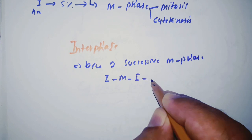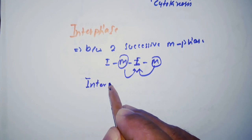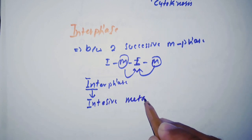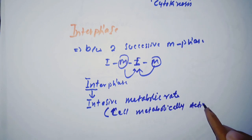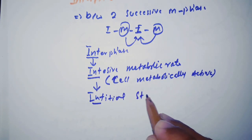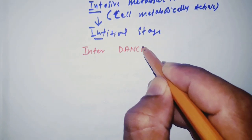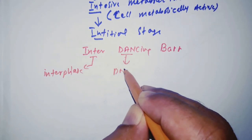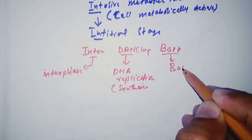Interphase comes first, then M phase, then interphase again — so interphase is between two successive M phases. From 'int' we can remember that there will be intensive metabolic rate in interphase, meaning the cell is metabolically active. From 'int' we can also remember that it is the initial stage of the cell cycle. The mnemonic here is 'inter dancing bar': inter is for interphase, dancing is for DNA replication or DNA synthesis, and bar is for Barr body study.